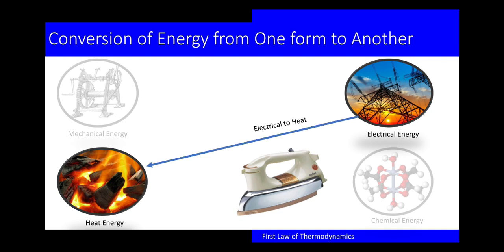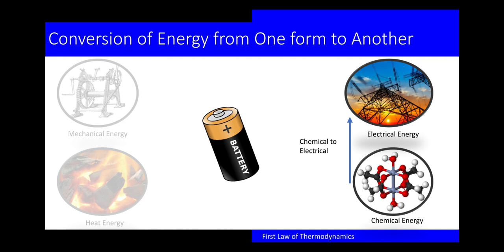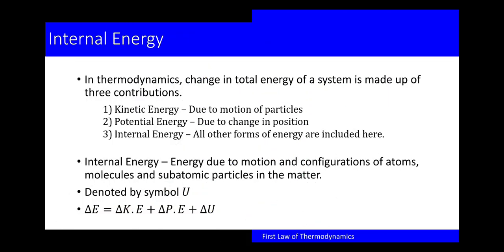We can also see electrical energy being converted to heat energy — the iron box is a great example. As soon as you switch on the power, the bottom surface of the iron box gets heated, so electrical energy is converted to heat energy. Next, chemical energy converted to electrical energy — the great example is your battery, where charges are stored in chemical form.